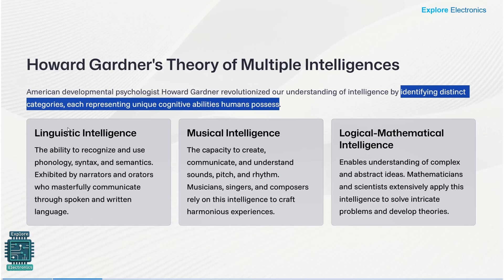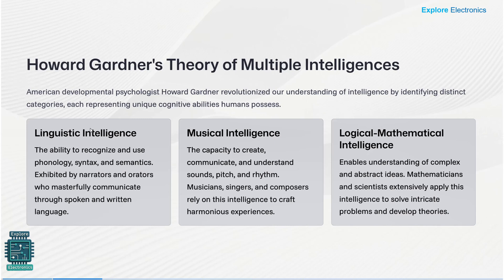The first one is linguistic intelligence. In linguistic intelligence, the ability to recognize and use phonology — that means phonics — syntax and semantics, through a language which can be used to speak, write, and communicate to other humans. So humans will have this linguistic intelligence that comes through language.